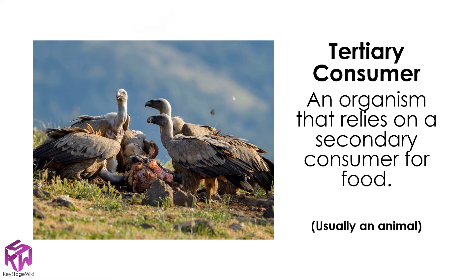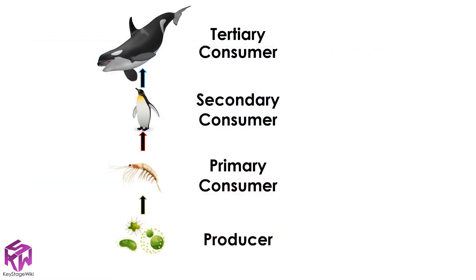In this example food chain, the producers are phytoplankton because they make their own food. The primary consumers are krill because they feed on the phytoplankton. The secondary consumers are penguins because they feed on the krill, and the tertiary consumers are killer whales.